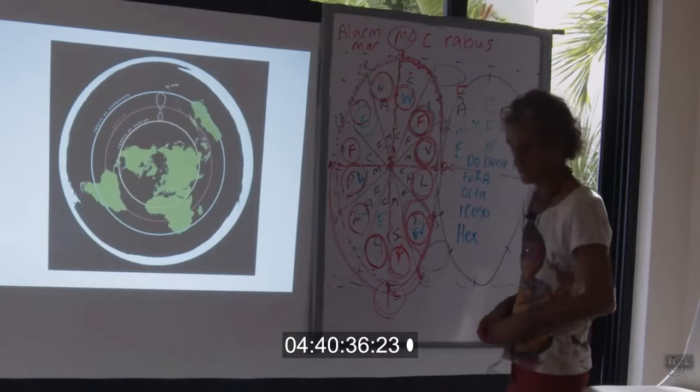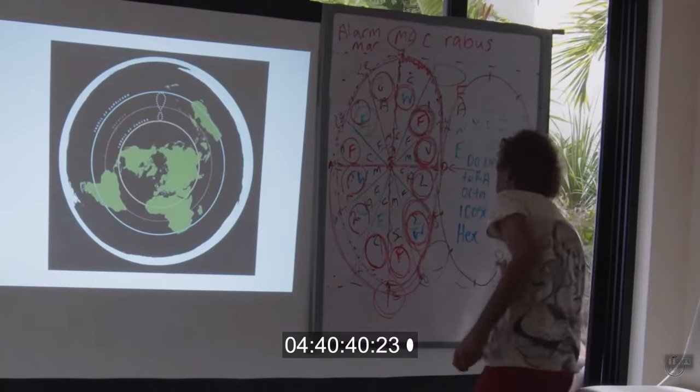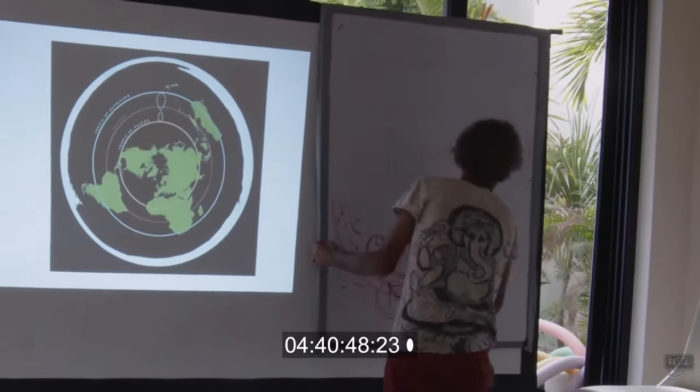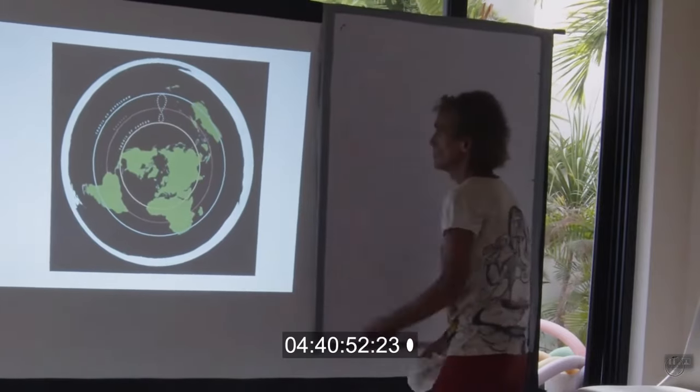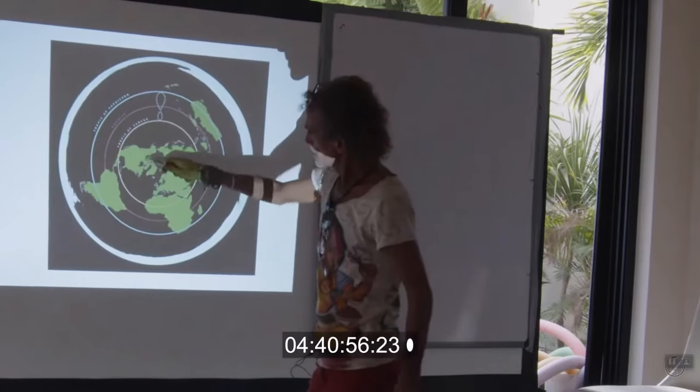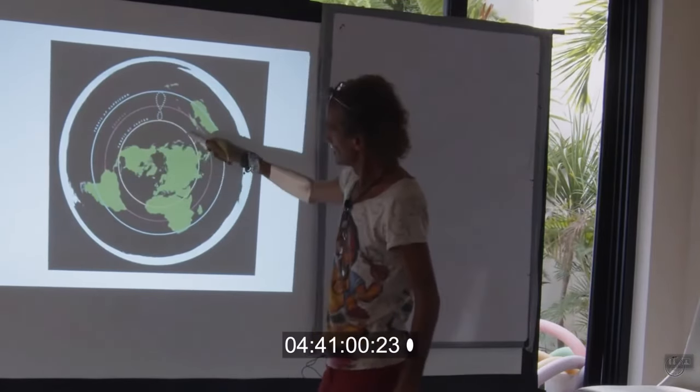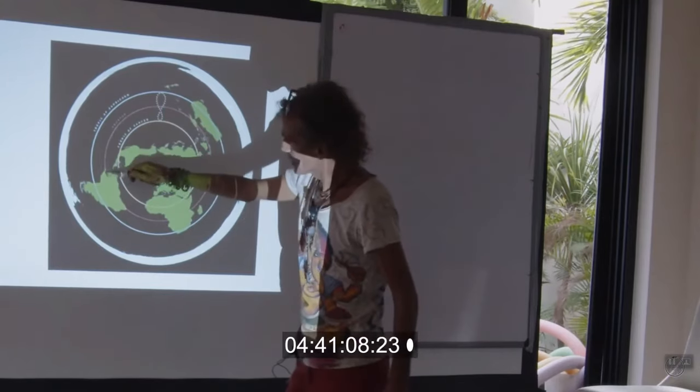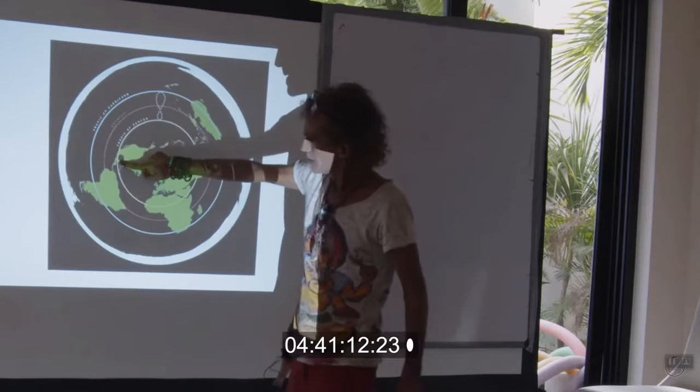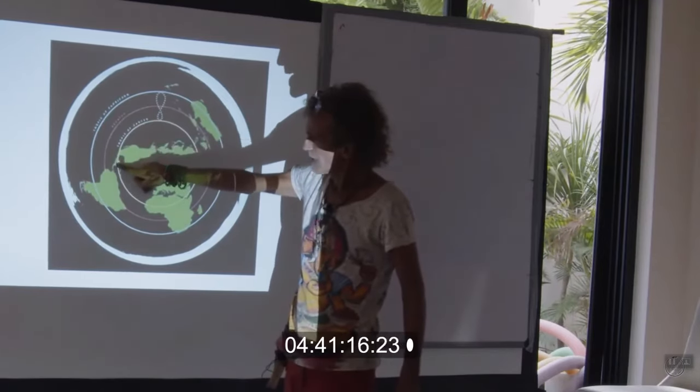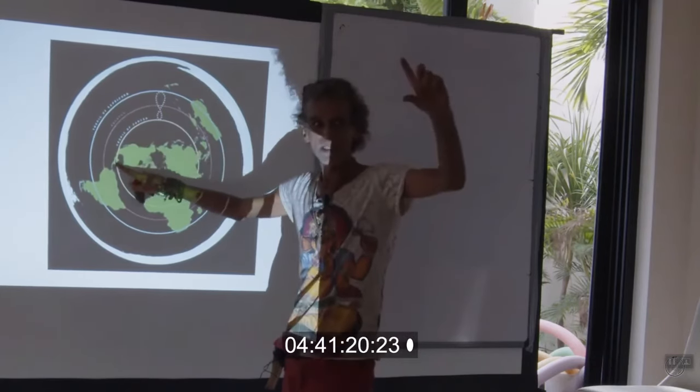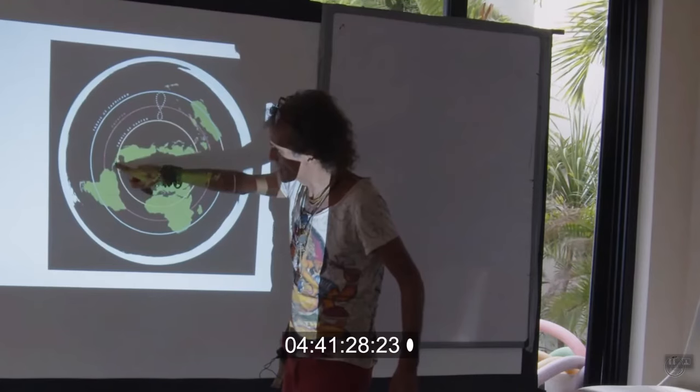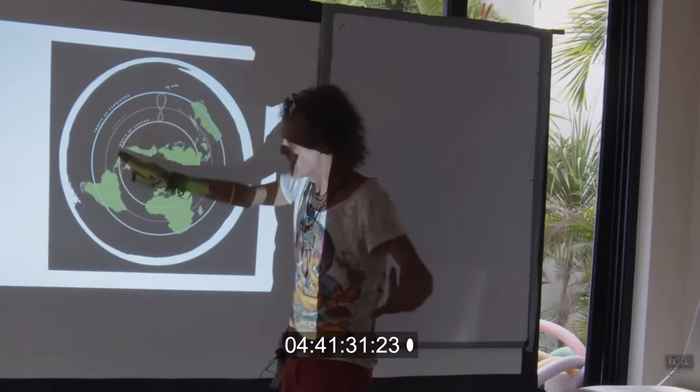So how does it work on a flat earth, which is the true model? Let's see how all of this works. So this is the Arctic Circle here, this is the Tropic of Cancer, this is the equator running right through Ecuador, and look at us at the Yucatan Peninsula.